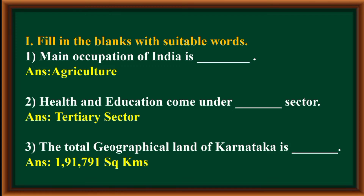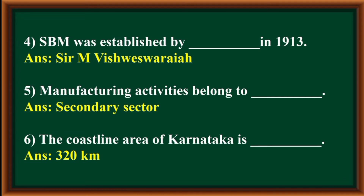The total geographical land of Karnataka is 191,791 square kilometers. SBM was established in 1913 by Sir M. Vishweshwariya. Manufacturing activities belong to the secondary sector. The coastline area of Karnataka is 320 kilometers.